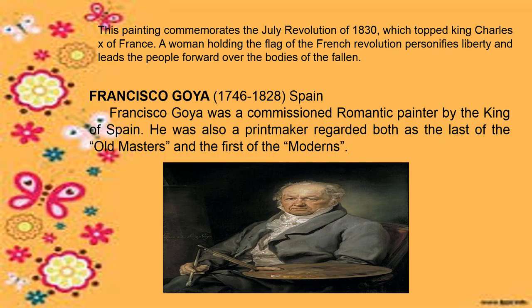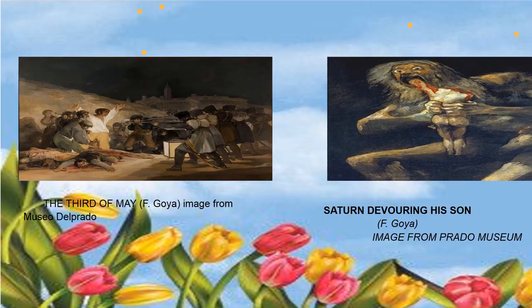Next is Francisco Goya, 1746–1828, Spain. Francisco Goya was a commissioned Romantic painter by the King of Spain. He was also a printmaker, regarded both as the last of the old masters and the first of the moderns. His artworks include The 3rd of May and Saturn Devouring His Son.